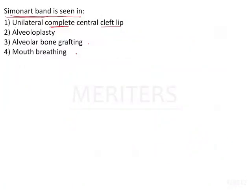The answer here is unilateral complete central cleft lip. Simonard bands are basically seen in complete clefts — they can be seen in unilateral as well as bilateral clefts.